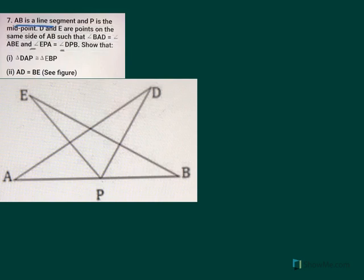First, AB is a line segment and P is the midpoint of AB. Since P is the midpoint, AP must be equal to PB. So AP equals PB because it is a midpoint.